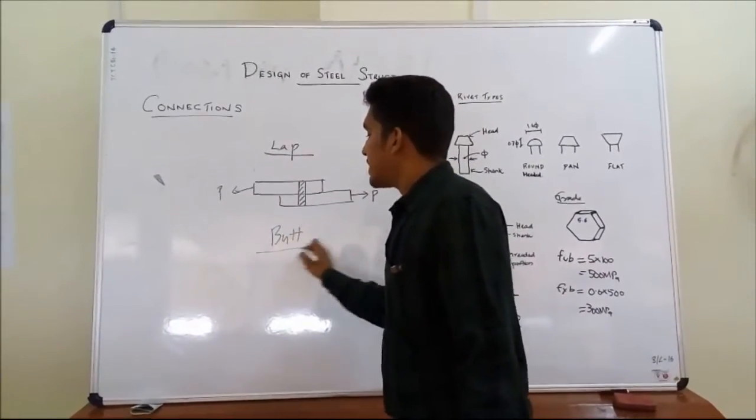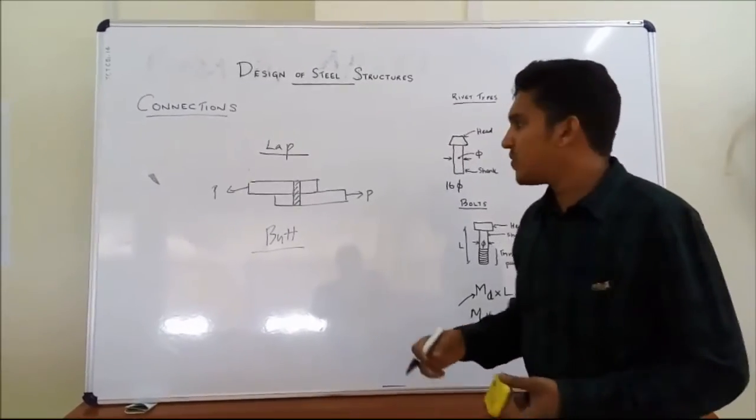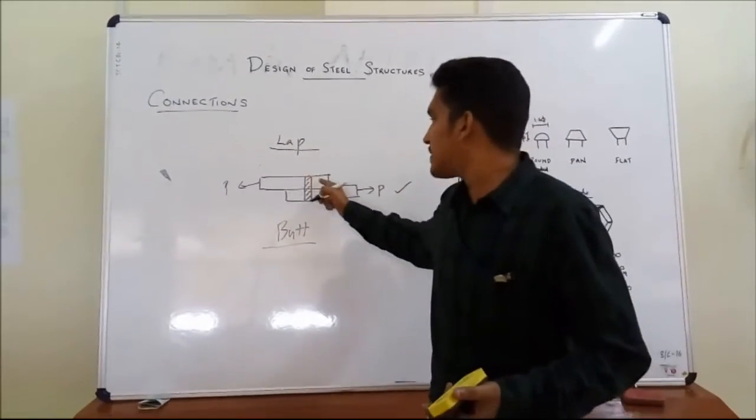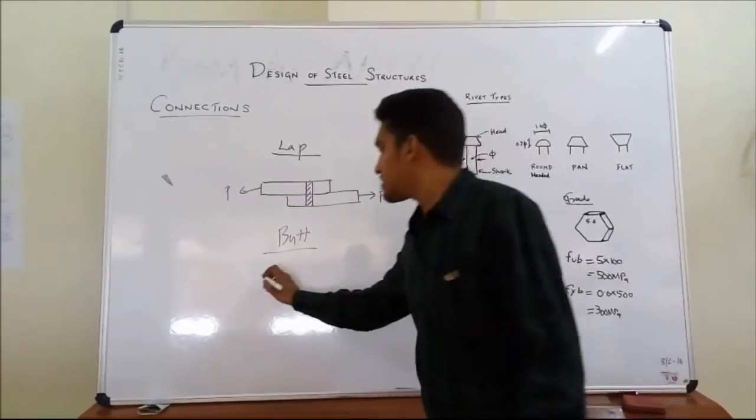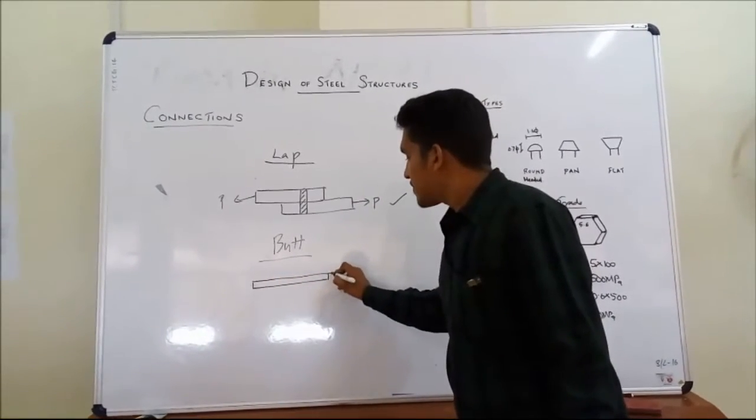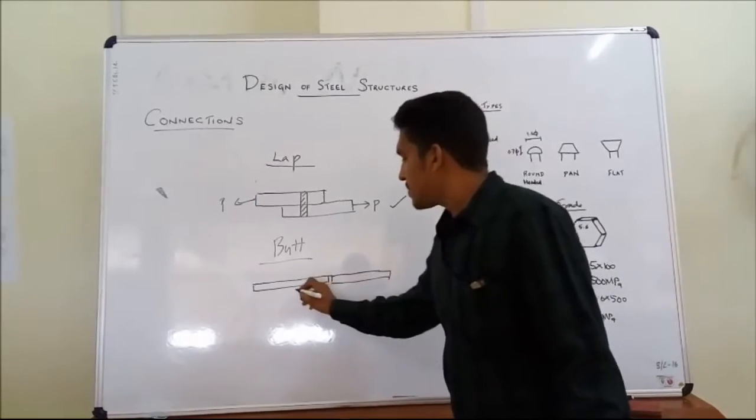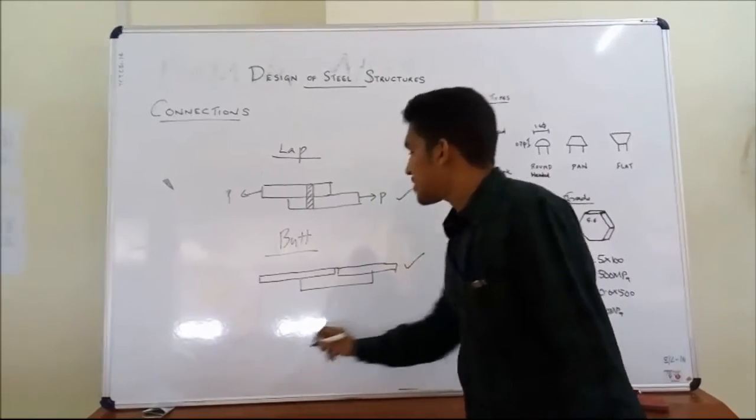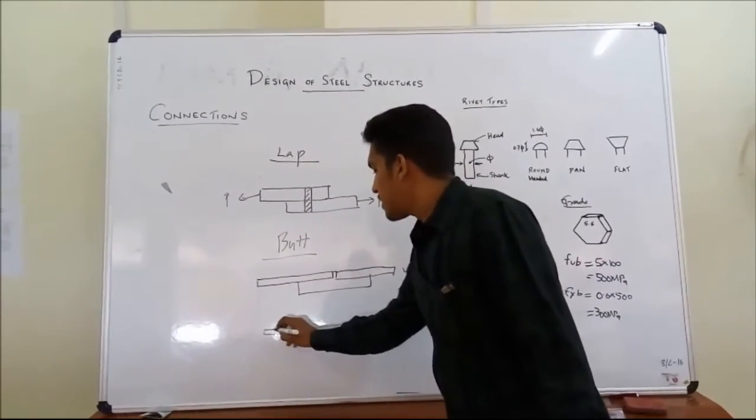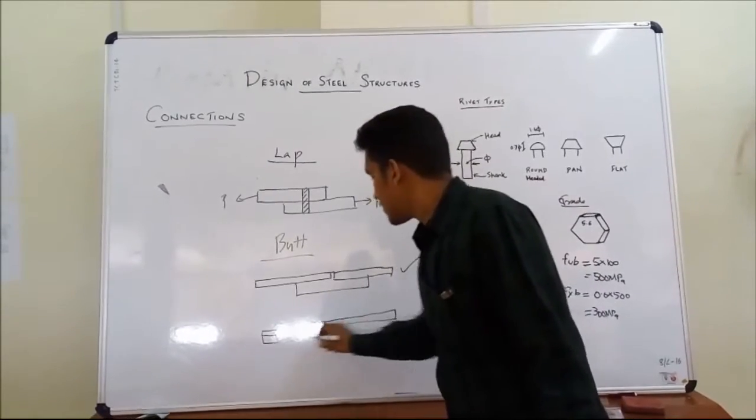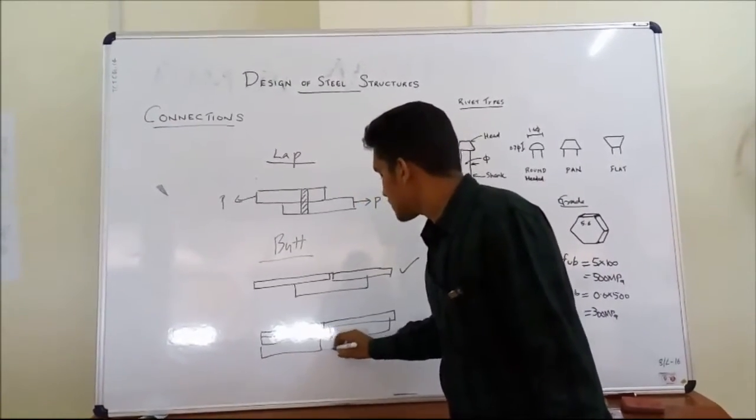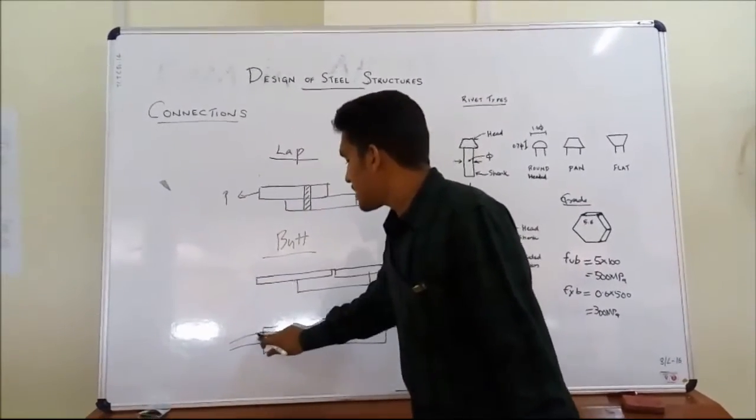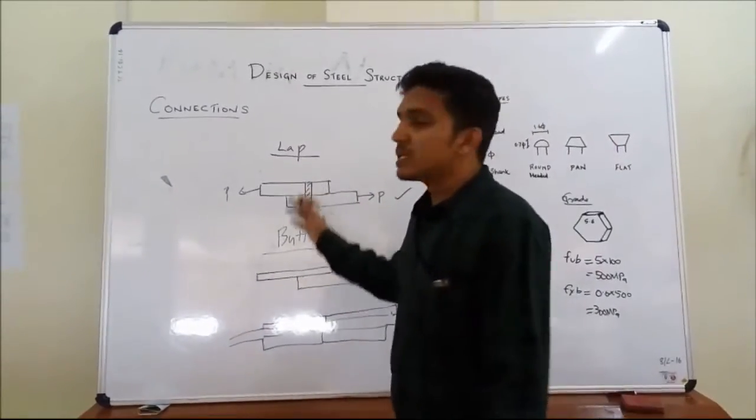A butt cover joint, it can be of two types. It is single cover or double cover. Why we use these types of connections? This means that lap connections, the center of gravity is not equally distributed. But in butt connection, we provide butt covers over a single body or a plate. This is a single cover butt joint. A double cover means it has two covers over the butt, over the plate. Usually, double cover butt joint is more preferable. These are the types of connections.